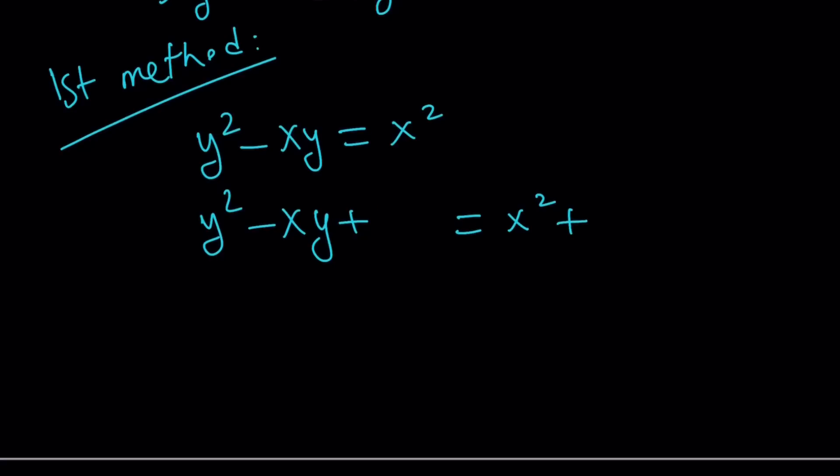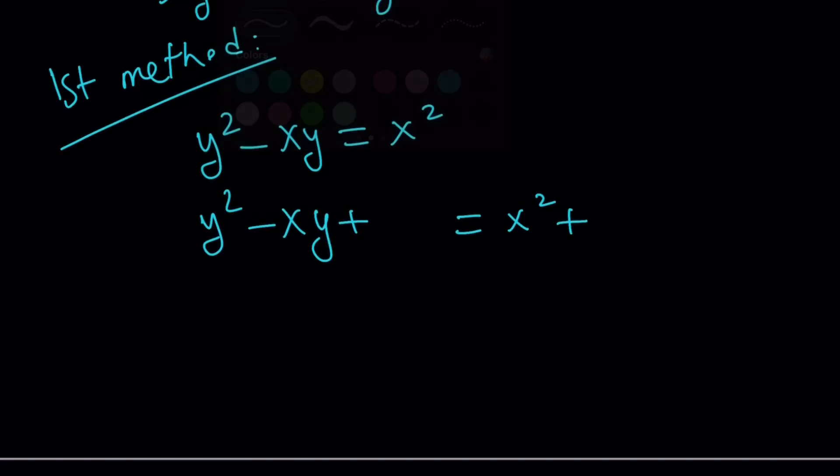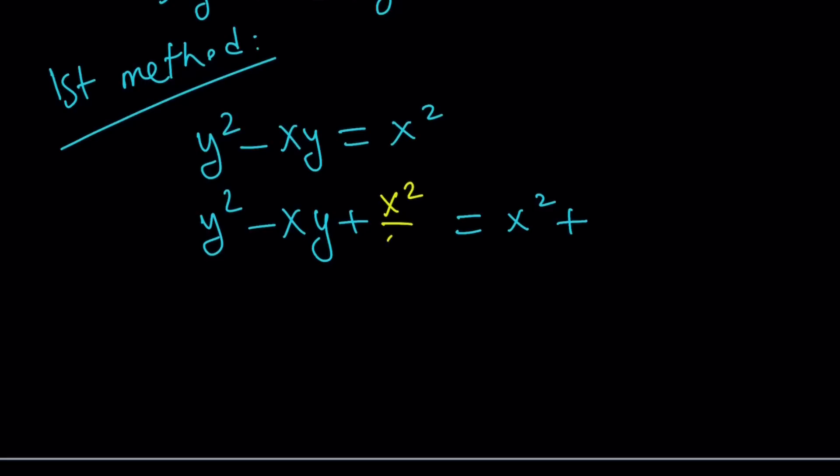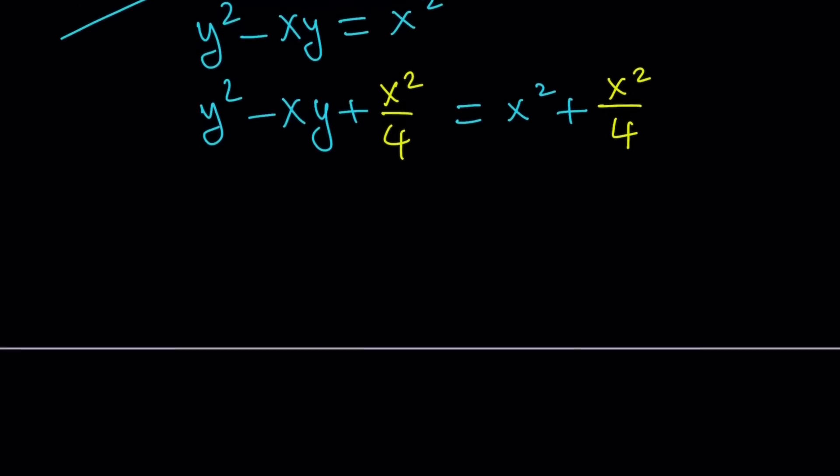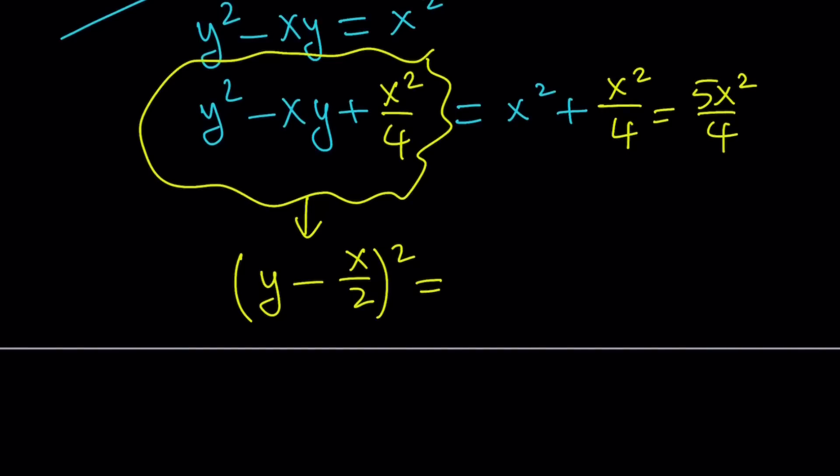We're adding x squared over 4 to both sides. Why? Because that completes the square. That makes it a perfect square. So this becomes y minus x over 2 squared. And this becomes 5x squared over 4, which can be written as square root of 5 times x divided by 2 quantity squared.